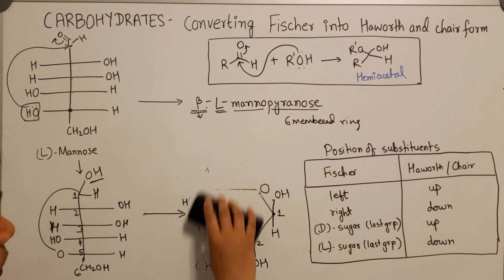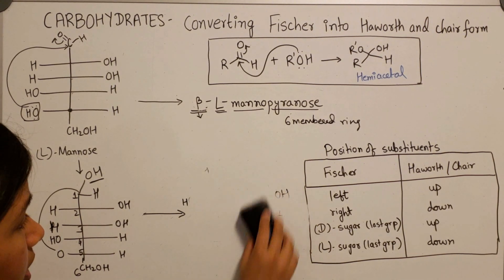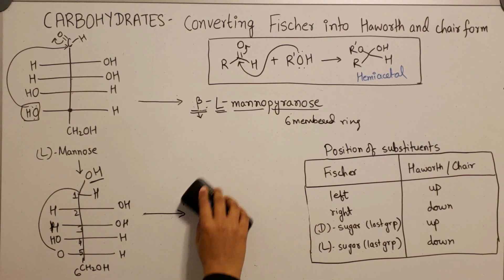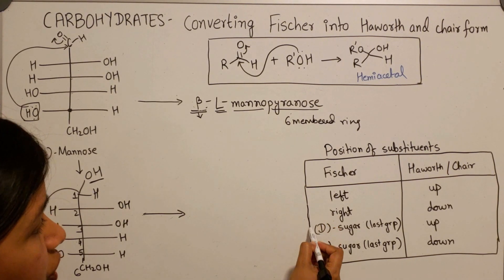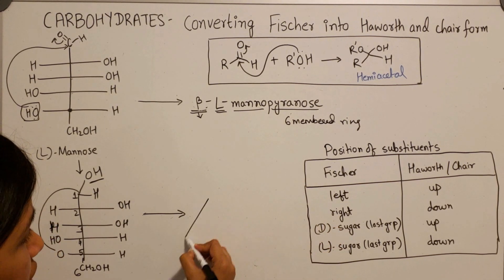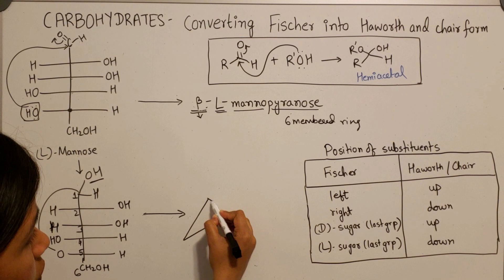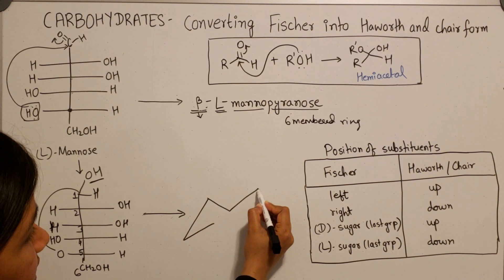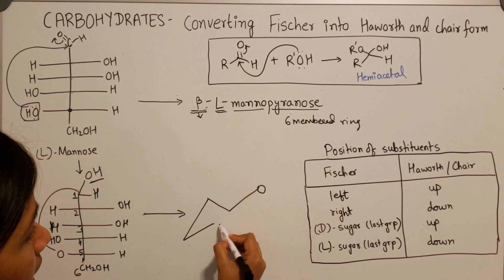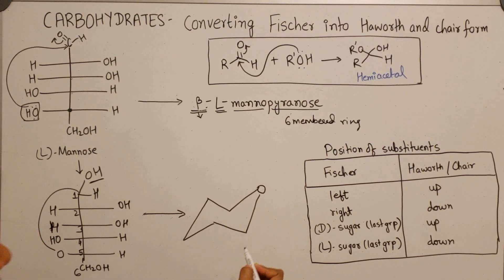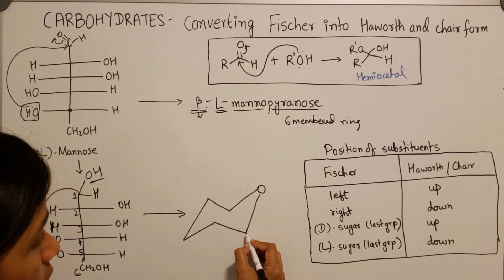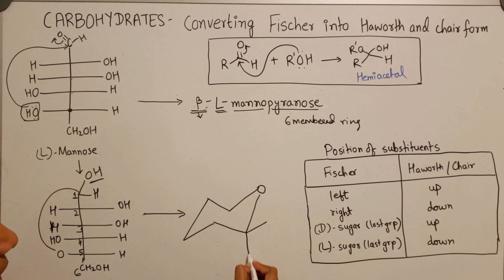We are done with the Haworth representation, and once you know that, it is a very simple process to draw the chair conformation. For the chair conformation, draw a six-membered ring containing oxygen in the chair form and draw all the axial and equatorial bonds.